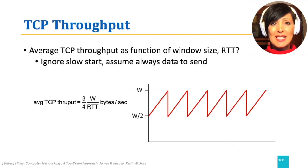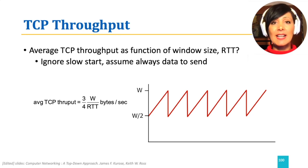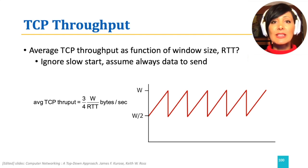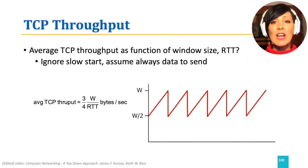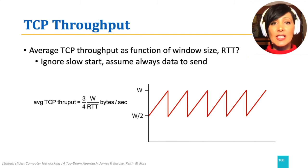Knowing the mechanisms implemented by TCP in more detail, let's now re-examine TCP throughput. Adding a simplifying condition, let's ignore slow start and assume the sender always has data to send. The average TCP throughput will keep changing between full window size and half the window size due to the AIMD mechanism. TCP throughput will be three-fourths of the window size divided by RTT, in bytes per second.